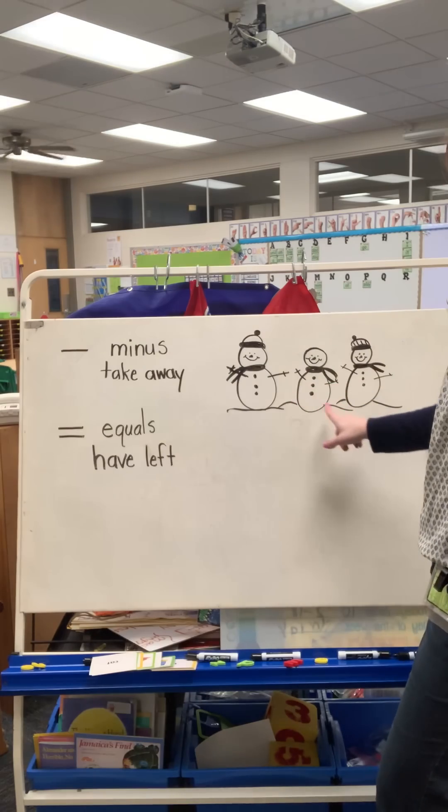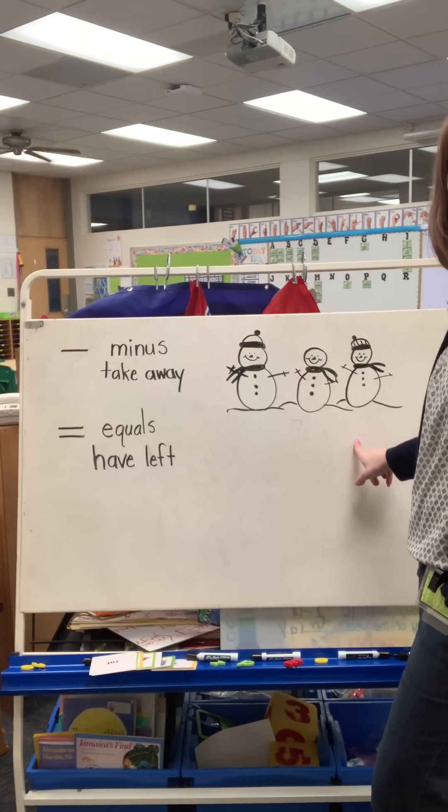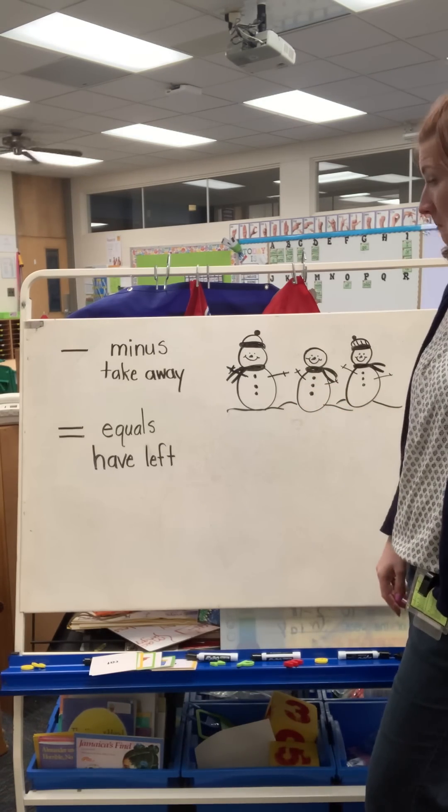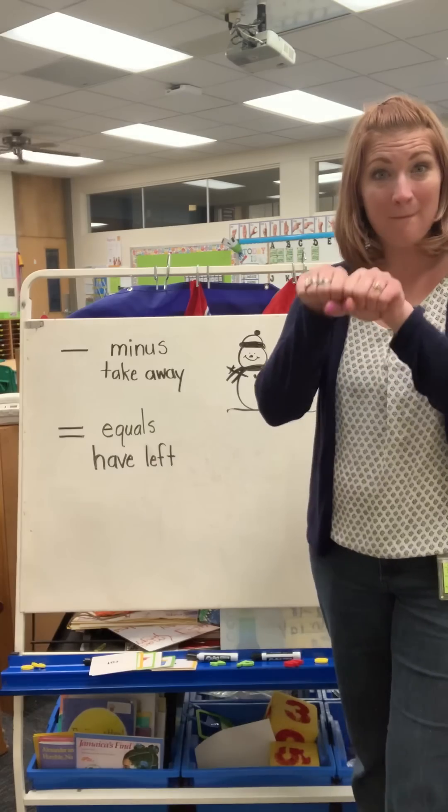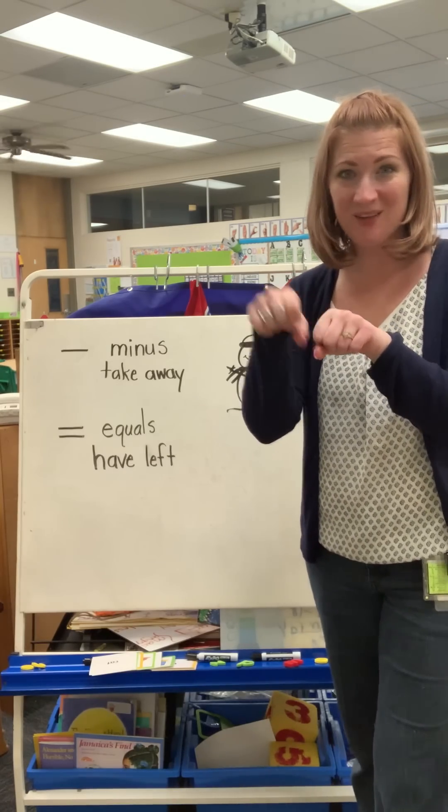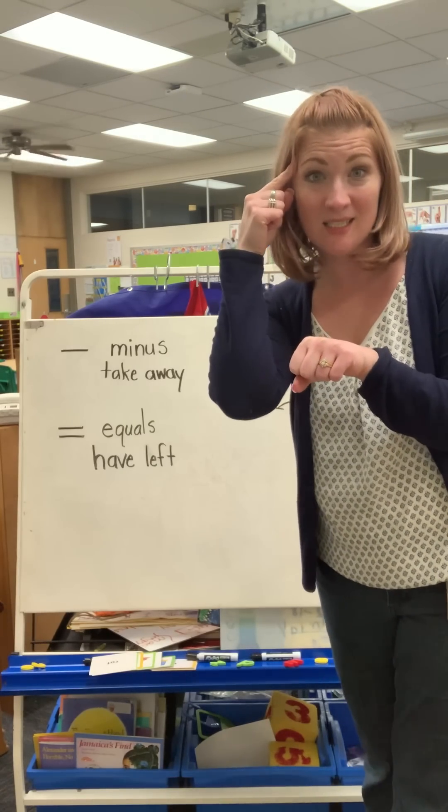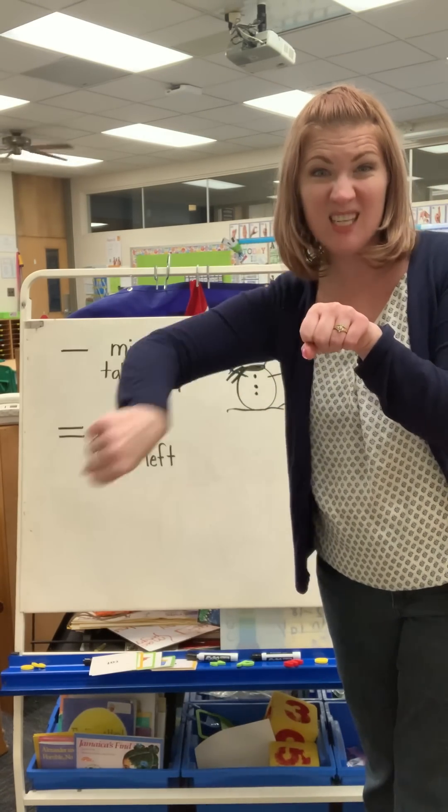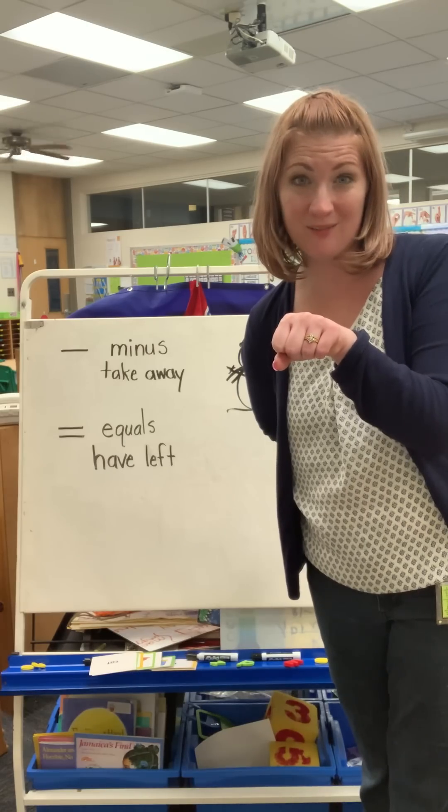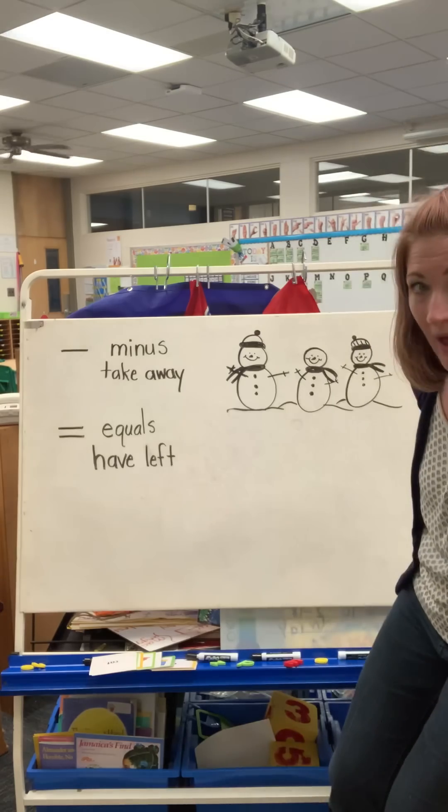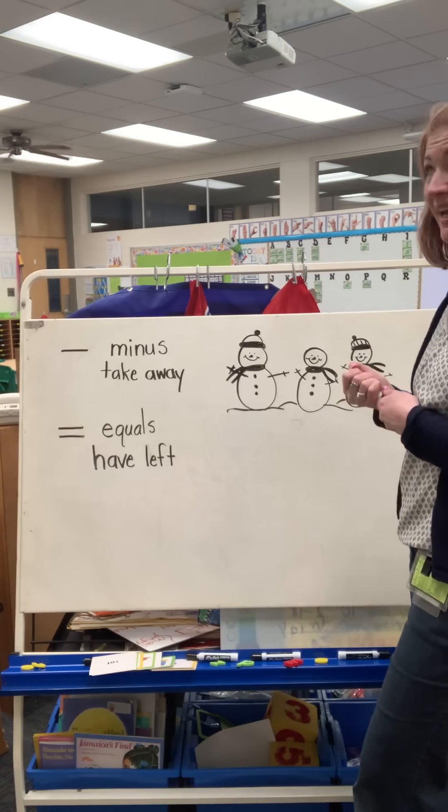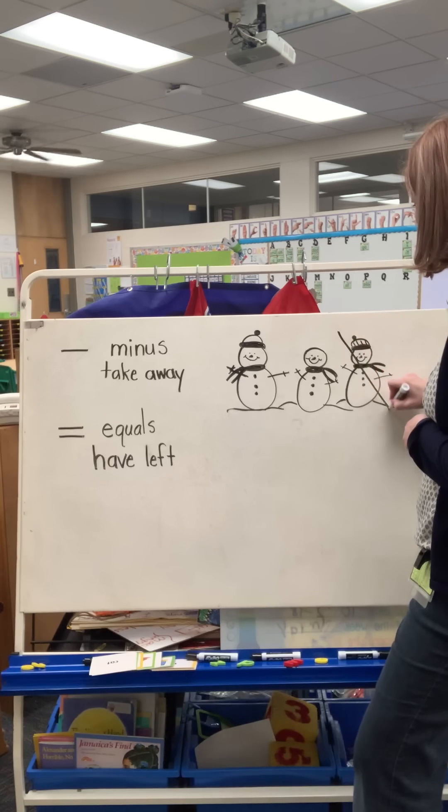So I have three snowmen. I start with a big number. Remember, subtraction is going to get smaller. Well, the sun came out and one snowman melted.